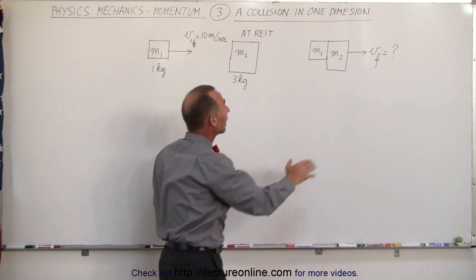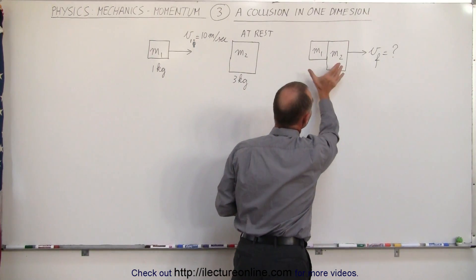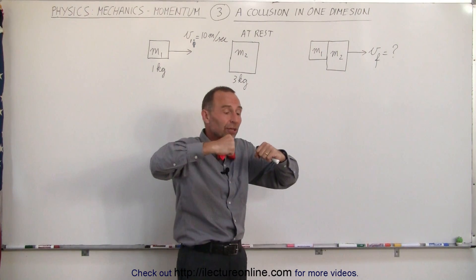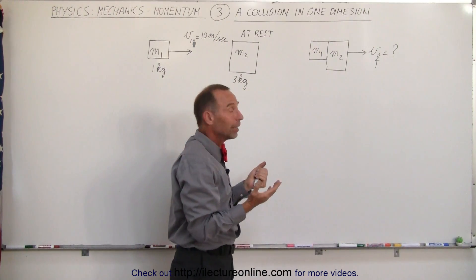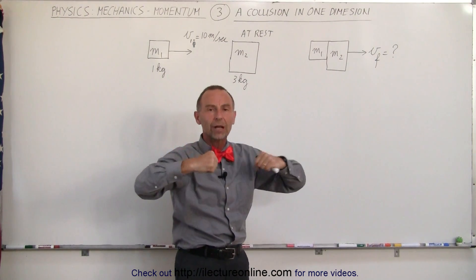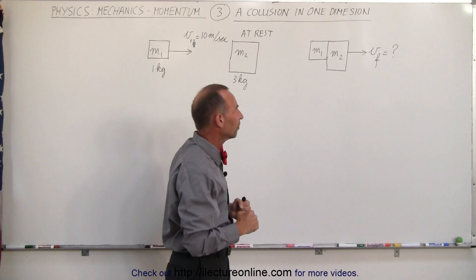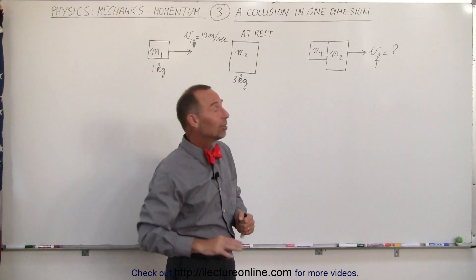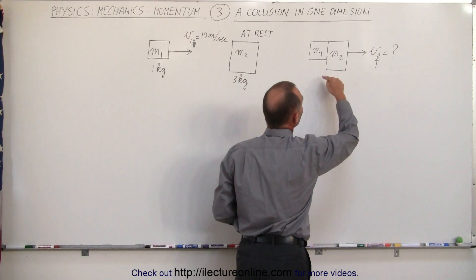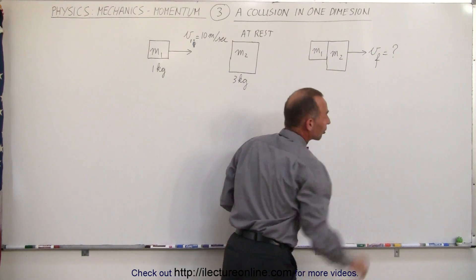They collide, and after they collide, they're both moving to the right. Let's say that they stick together, because sometimes in collisions objects stick together, and otherwise they do not stick together. They bounce off and move in different directions after the collision. Usually the problem is easier when they stick together, and we're trying to find the final velocity of both objects after the collision.